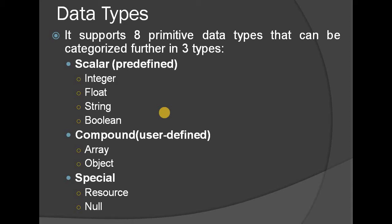The scalar types are: integer, float, string, and boolean. These are already predefined data types — integer, float, string, and boolean are all predefined. That is scalar.